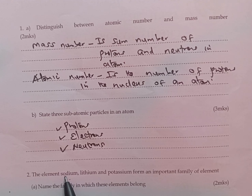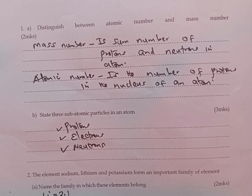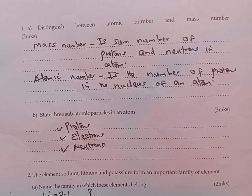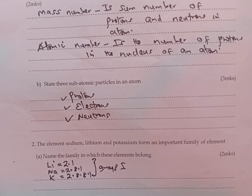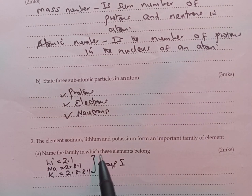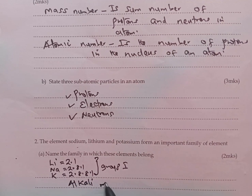These elements — lithium with atomic number 3 and electron arrangement 2, 1; sodium with atomic number 11 and arrangement 2, 8, 1; and potassium with atomic number 19 and arrangement 2, 8, 8, 1 — are all found in group 1 of the periodic table, since they all have one electron in the outermost energy level. All group 1 elements belong to a chemical family known as alkali metals.